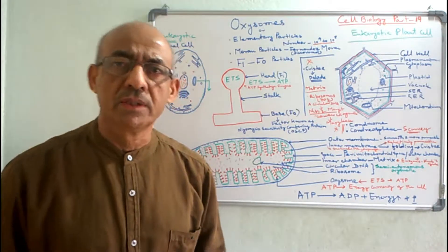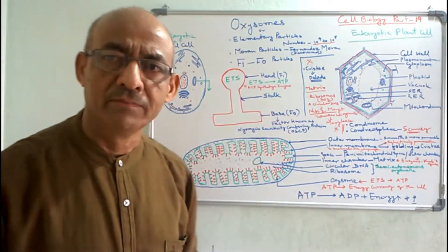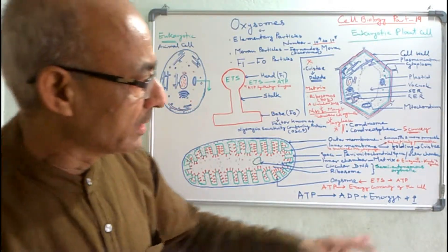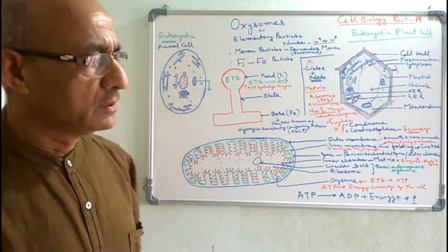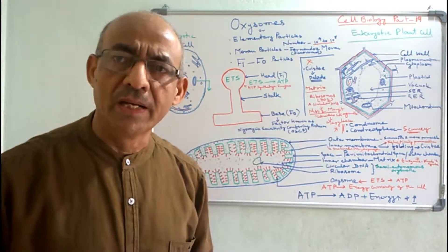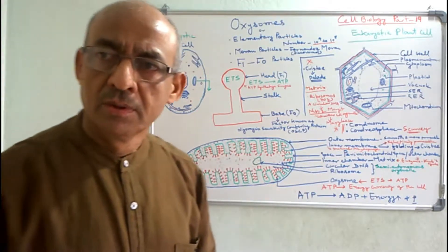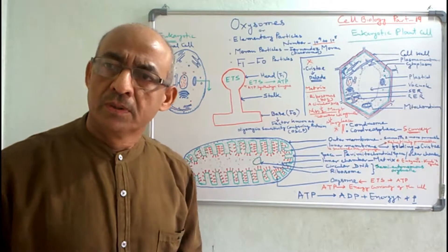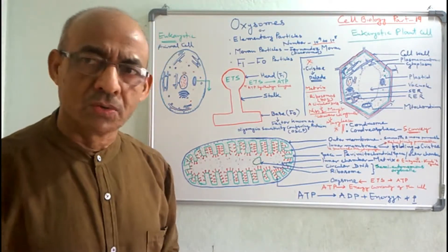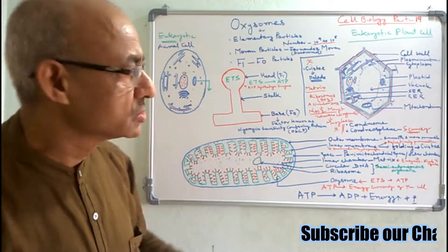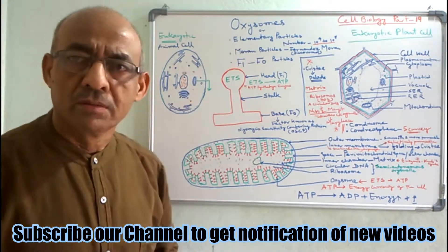One important piece of information regarding the discovery of the Cristae — you should know the name of the scientist who first identified and discovered the Cristae. The name of that scientist was Palade. Palade first time observed and studied the projections found on the inner membrane of mitochondria. So credit for the study and discovery of the Cristae goes to Palade. Now we will start discussion on oxysomes.